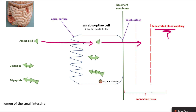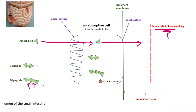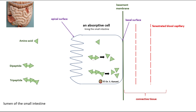Our digestive system is also capable of absorbing dipeptide and tripeptide. Dipeptide means two amino acids still held together with a peptide bond, and tripeptide means three amino acids still attached together by peptide bonds. When we absorb dipeptide and tripeptide into the absorptive cells, enzymes inside the absorptive cells break them down into individual amino acids, which are then absorbed through the basal surface.